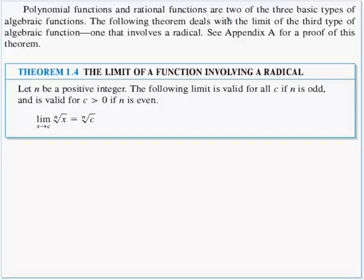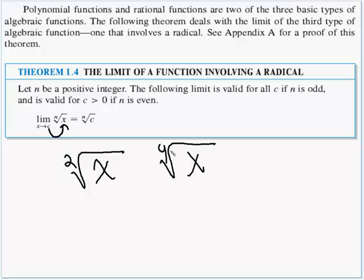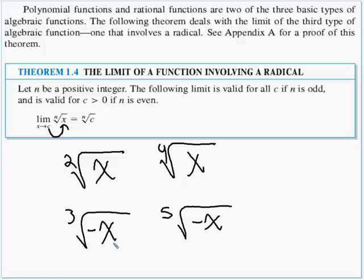Polynomial and rational functions are two of the three basic types of algebraic functions. Theorem 1-4 deals with the limit of a third type — one involving a radical. Let n be a positive integer, the index outside the radical sign. This limit is valid for all c if the index is odd, and valid only for c greater than zero if n is even. The limit as x approaches c of the nth root of x equals the nth root of c. Remember: even roots require positive values, while odd roots can be taken of negative values.